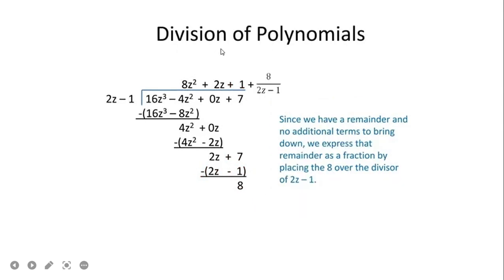Our answer is 8z squared plus 2z plus 1, with a remainder of 8. The remainder is written as 8 over (2z minus 1), our divisor.